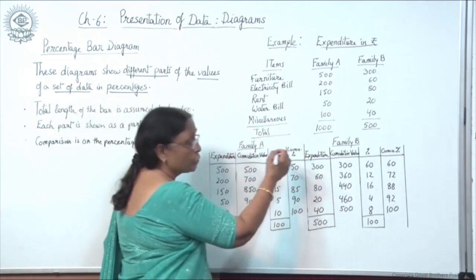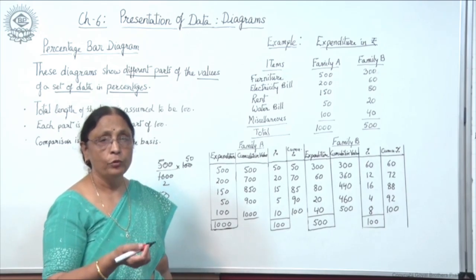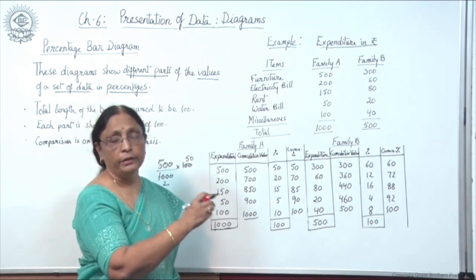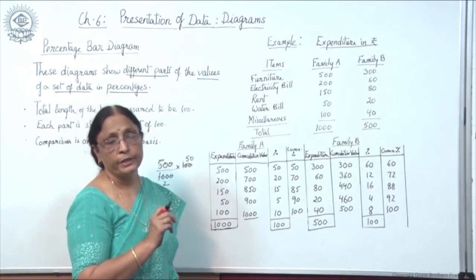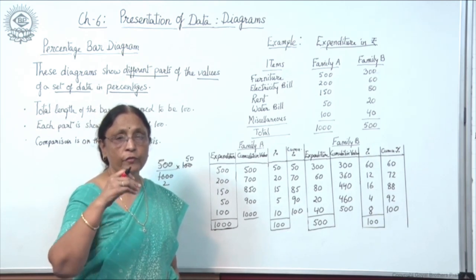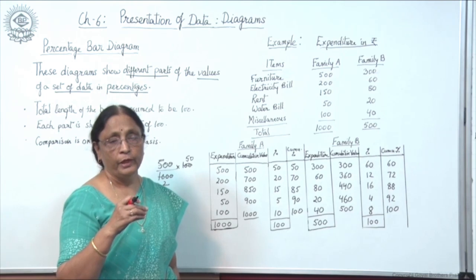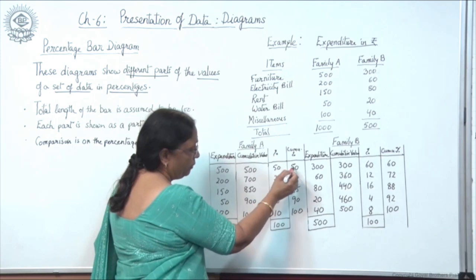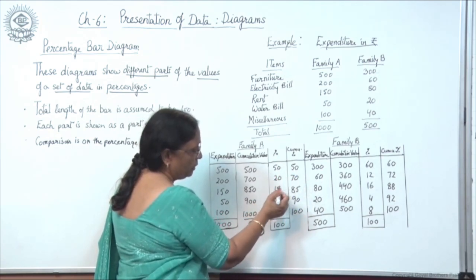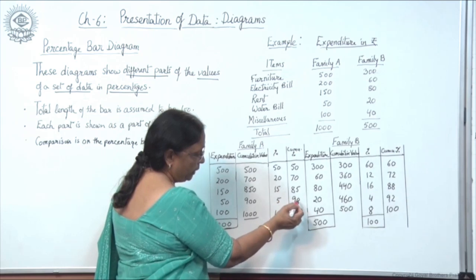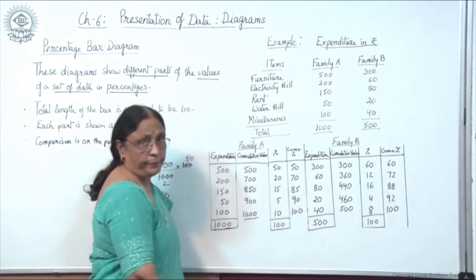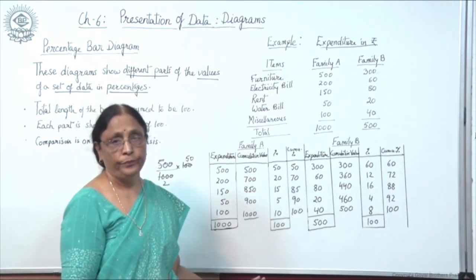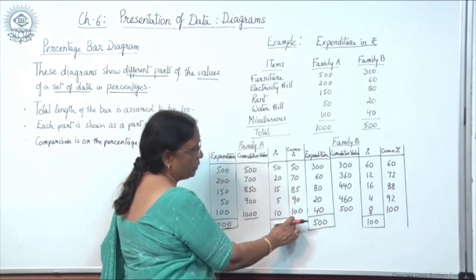The next column shows cumulative percentage. We calculate cumulative percentage because when dividing the bar, the cumulative percentage makes it easier to mark the divisions. For Family A: 50, then 50+20=70, then 85, then 90, then 100. This becomes the cumulative percentage of Family A.